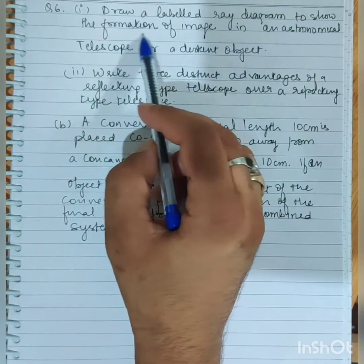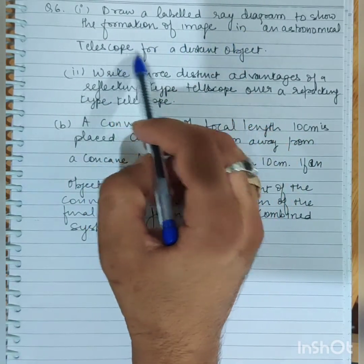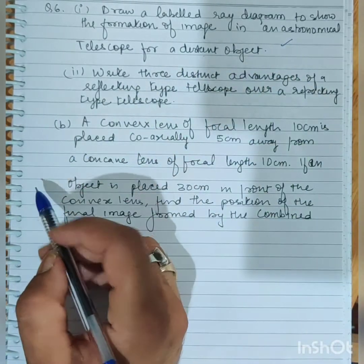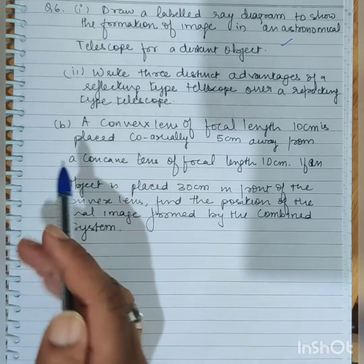Draw a labeled ray diagram to show the formation of image in an astronomical telescope for distant objects. We have done this, so we are not attempting now. After you have asked questions about the telescope's diagram.